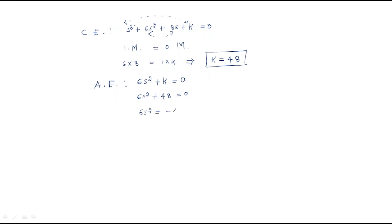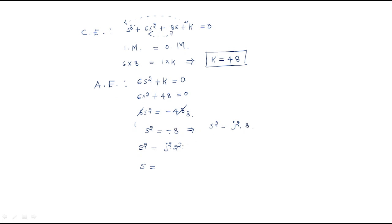Solving: 6s² = -48, so s² = -8. Writing -8 as j²·(2√2)², we get s = ±j2√2. Therefore s₁ = +j2√2 and s₂ = -j2√2. These are the intersection points with the imaginary axis.